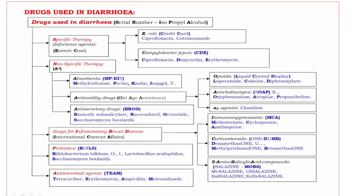Next, Anticholinergics mnemonic is SOAP, bold letters O-A-P: O for Oxyphenonium, A for Atropine, P for Propantheline. Last Antimotility Drug is Alpha-2 Agonist, and the drug is Clonidine.